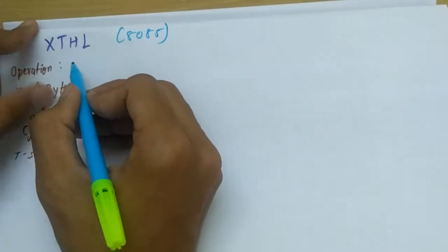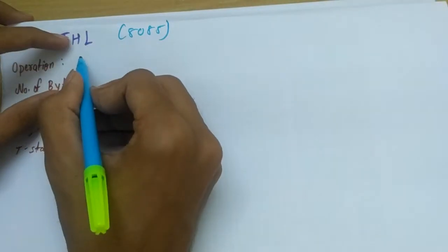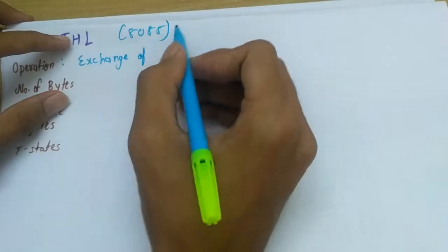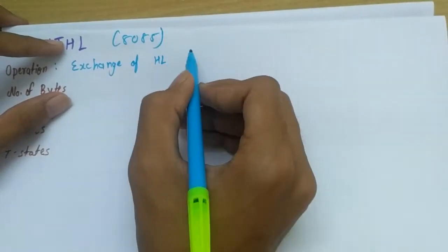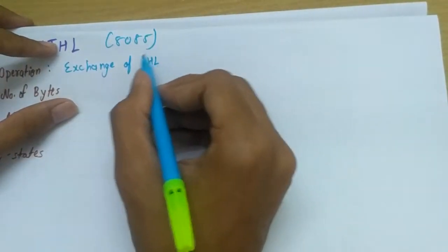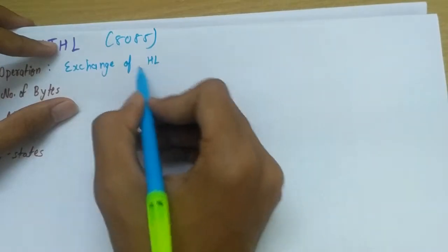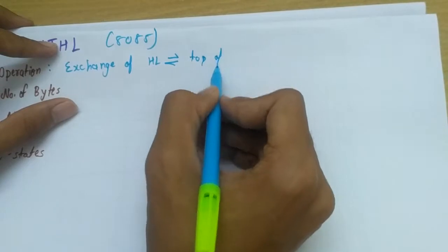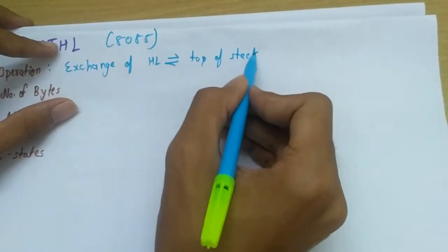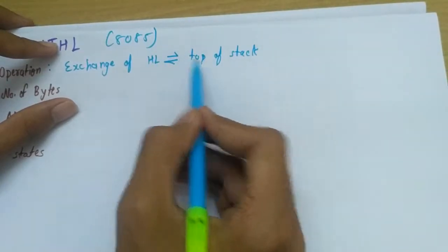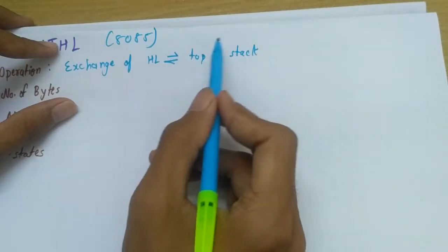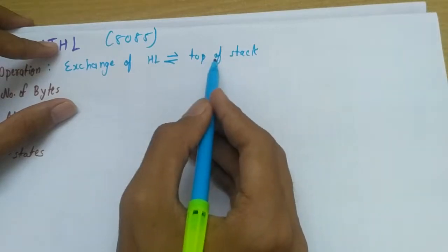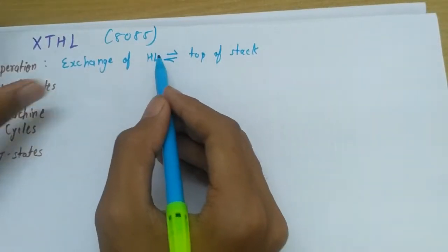In simple words, we have an exchange of HL register pair. The data of HL will be exchanged with the top of stack. This means that whatever data is at the top of the stack, that is at the address pointed by the stack pointer, is exchanged with the HL register.